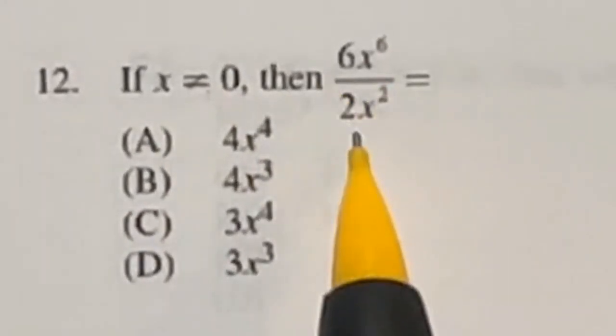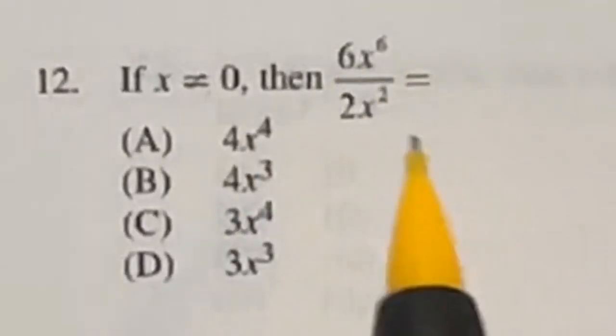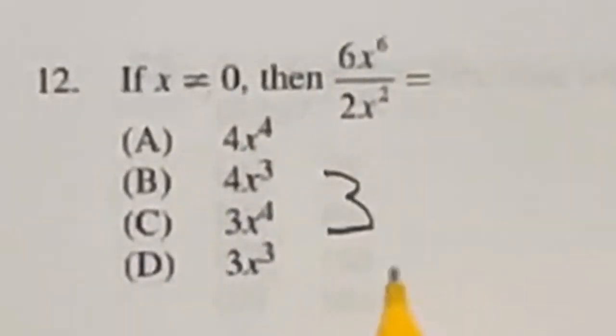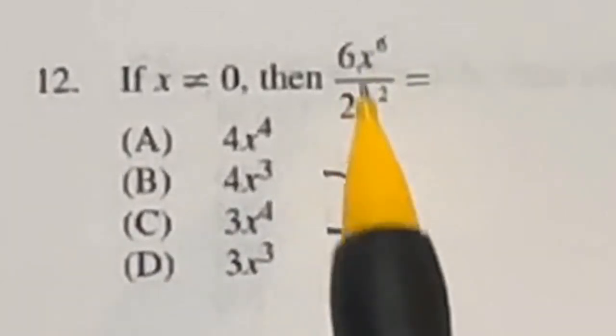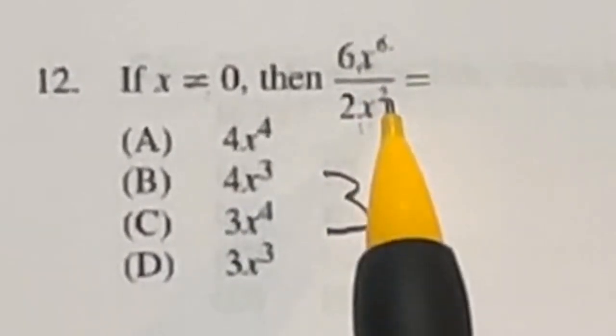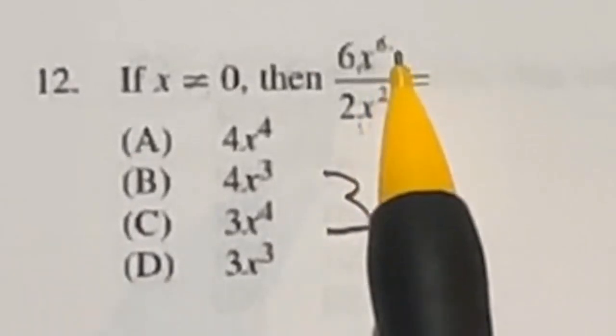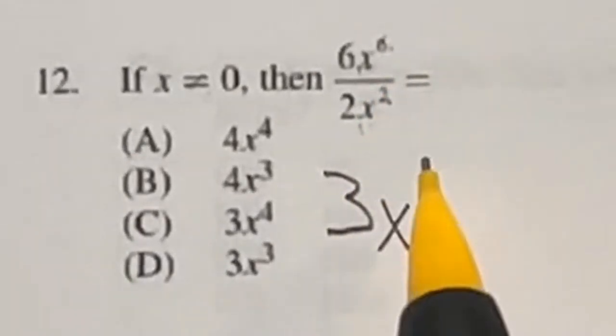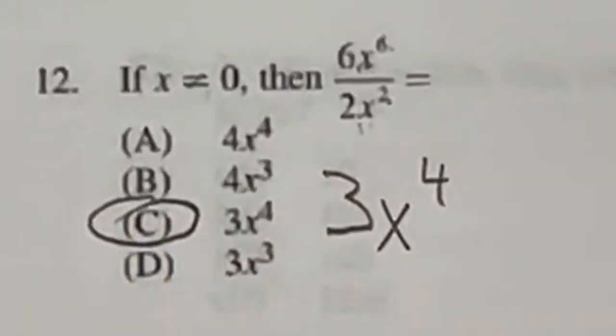Now, because this is a fraction, we can reduce the numbers out front right away because we're not adding or subtracting at all in here. So six divided by two is going to end up giving me three. Now, by the quotient rule, we know that if we have exponents of the same variable, x and x here, then you can just subtract the exponents to get what is left over. So in this case, I have that x and we have x raised to the sixth power minus two would give me four. So our final answer should be three x to the fourth power, which is C.